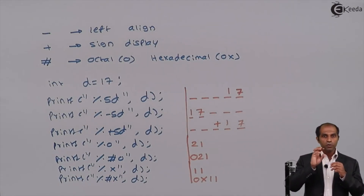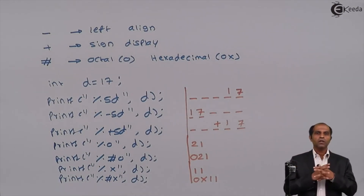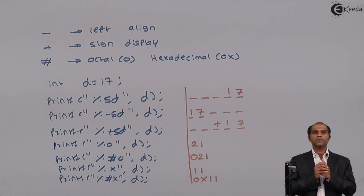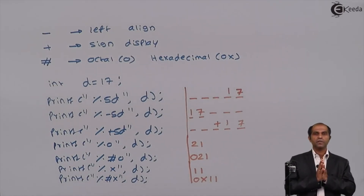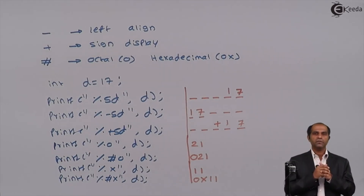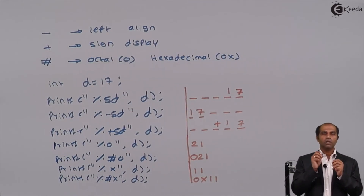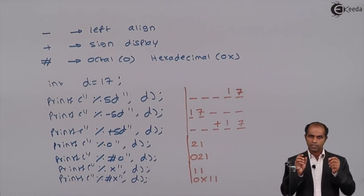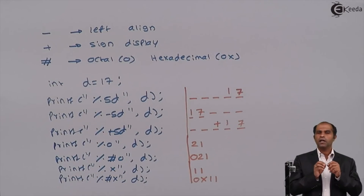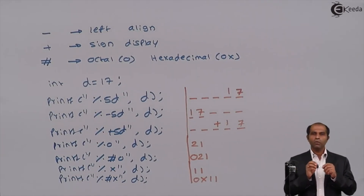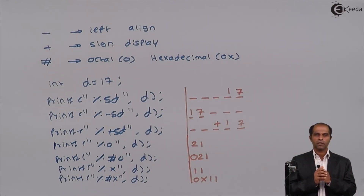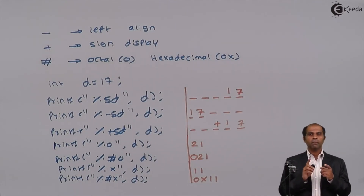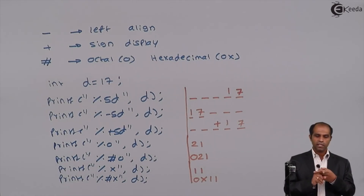The hash flag can also be used with the g specifier. If you use percentage hash g, it makes the g specifier work similarly to percentage f by displaying additional trailing zeros. However, this is rarely used and doesn't have any practical purpose, so we avoid using the hash flag with the g specifier.